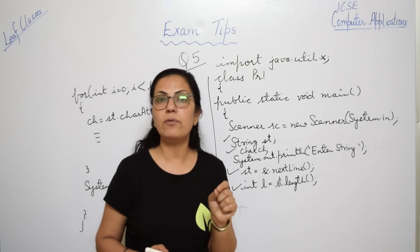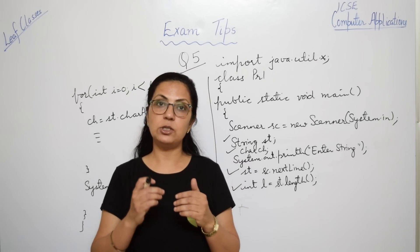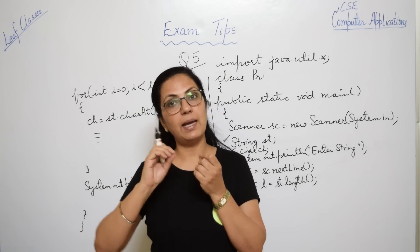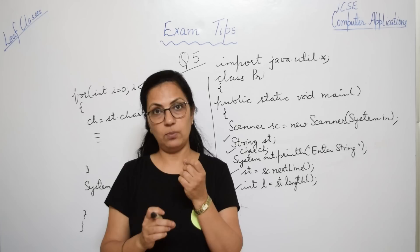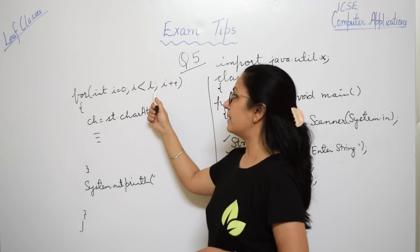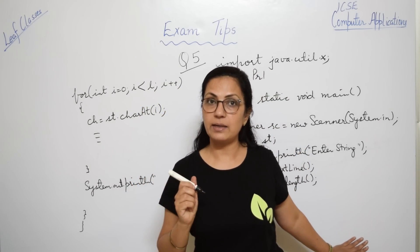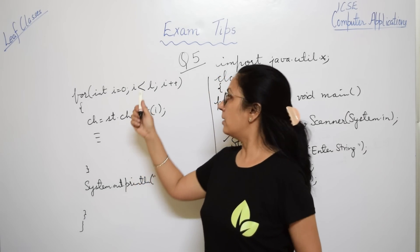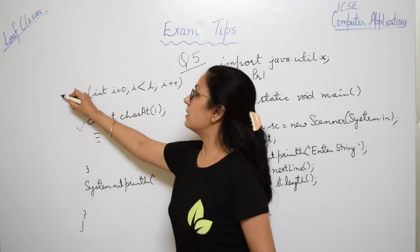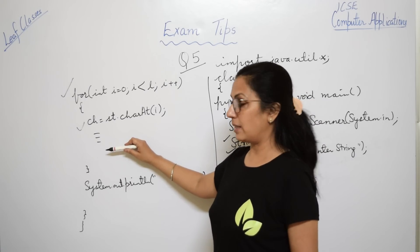These two statements — getting the string input and finding its length — will be there for each and every string program. For any string manipulation, we need to extract characters one by one. For character-by-character extraction, use a for loop. In strings, the for loop starts as: for(int i = 0; i < l; i++) because the last index number is size minus one, and l stores the number of characters. Then extract each character using the charAt() function.